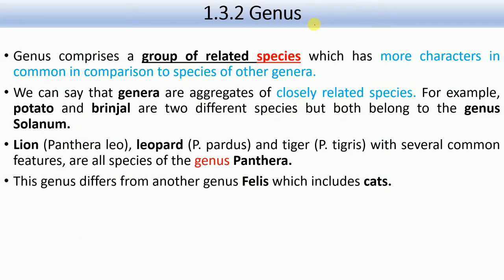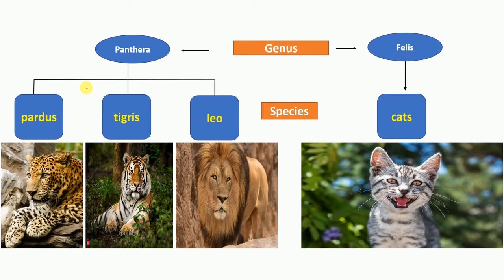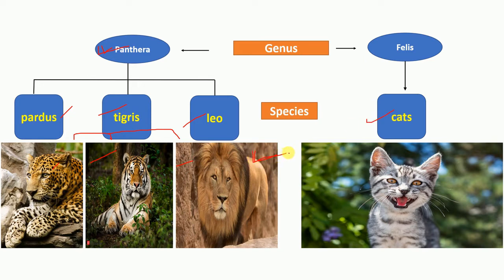Now let's move on to the next category: genus. Genus is a group of related species which has more characters in common compared to species of other genera. For example, we cannot put Pardus, Tigris, and Leo in one species. So Panthera has three species — Pardus, Tigris, and Leo — because they share similarities. That is why they all fall under one genus: Panthera. But we cannot put the cat under Panthera, because there are too many dissimilarities. That is why the cat has a separate genus: Felis.